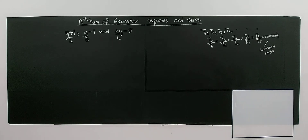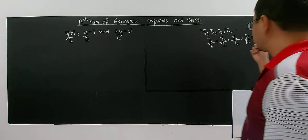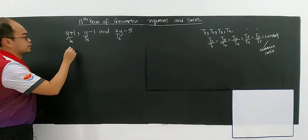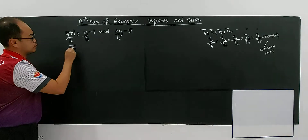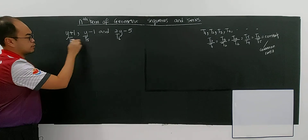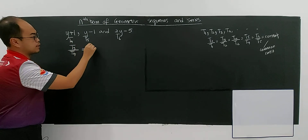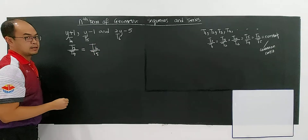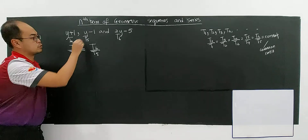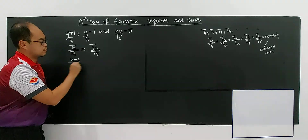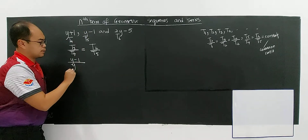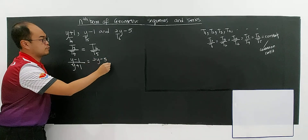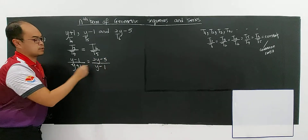So, very simple. I'm going to apply this knowledge to find the value of y here. I can say that t5 divided by t4 will be a constant, and this constant is the same as t6 divided by t5. This is the common ratio. So that means y minus 1 divided by y plus 1 equals 2y minus 5 divided by y minus 1.